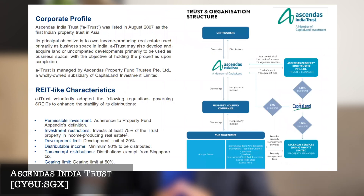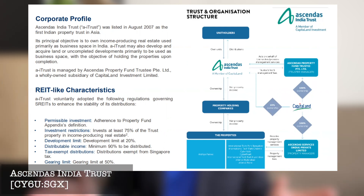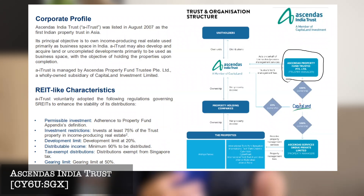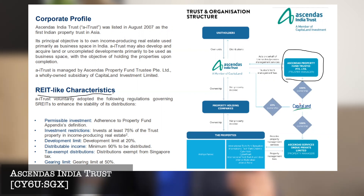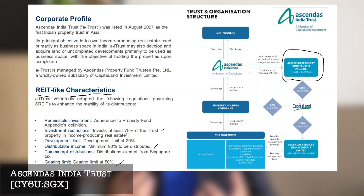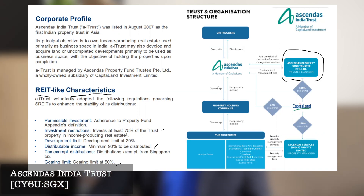The last business trust, which is also a property trust, is called Ascendas India Trust. The sponsor for this business trust is CapitaLand. Their focus is mainly on income-producing real estate in India, and it is registered as a business trust where the trustee and manager is the same person. However, this business trust chooses to adopt REIT-like characteristics — they follow REIT regulations, meaning they invest at least 65% of the trust money into income-producing properties, distribute a minimum of 90% of the income, and set their gearing limit at 50%. This is a self-imposed regulation internally — they are a business trust that acts like a REIT.